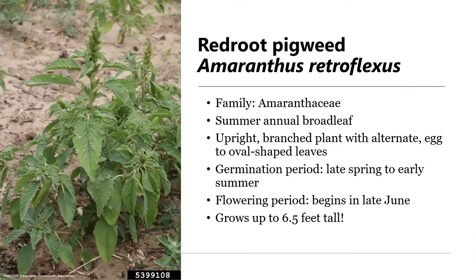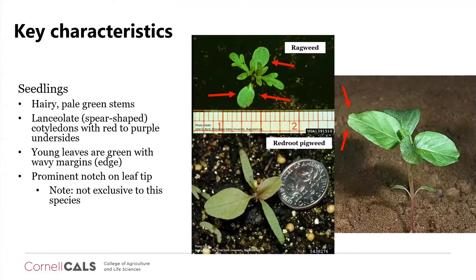Next is red root pigweed, Amaranthus retroflexus, in the amaranth family — the same family as all your pigweeds and lamb's quarters. It is another summer annual broadleaf weed with an upright, branched growth habit and alternate, egg- to oval-shaped leaves. Its germination period is from late spring to early summer, and flowering can begin as early as late June. This plant can get quite large — pigweed can grow up to six and a half feet tall.